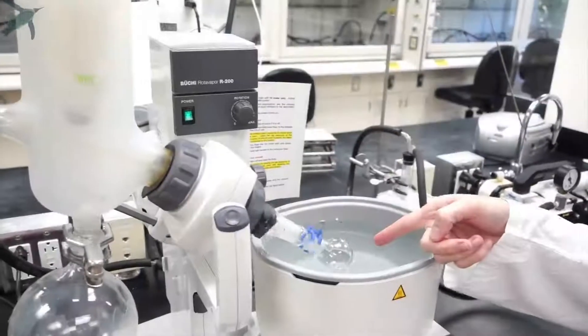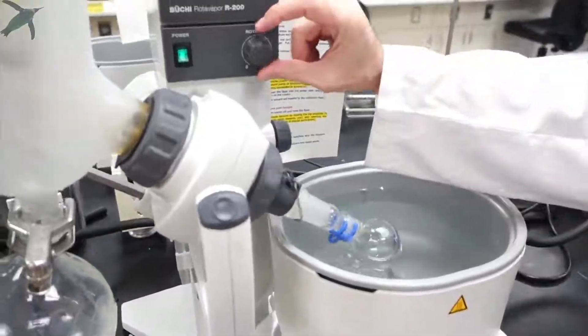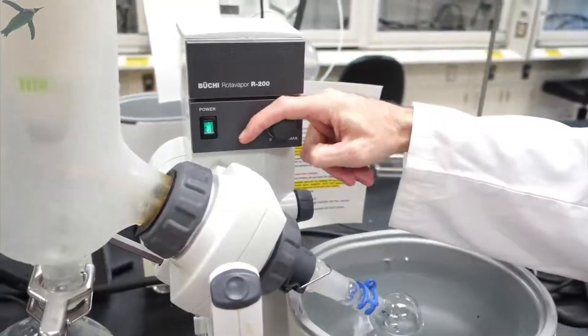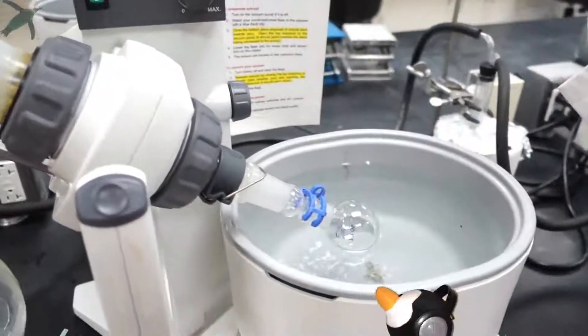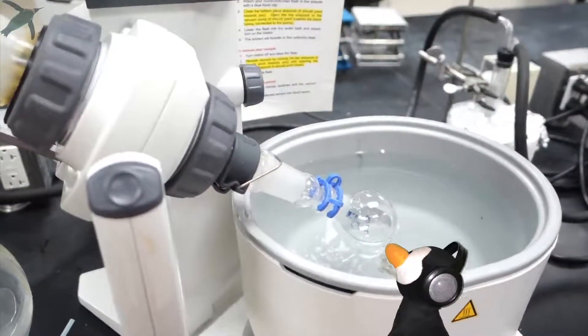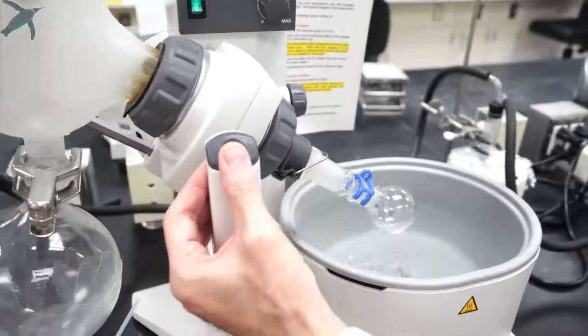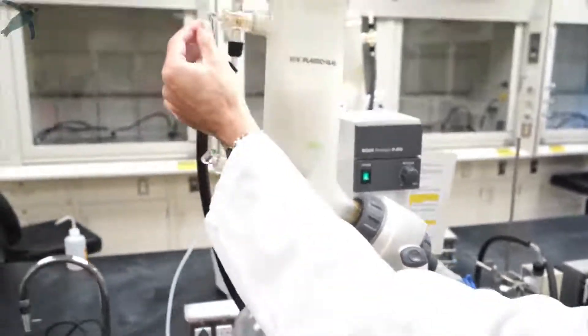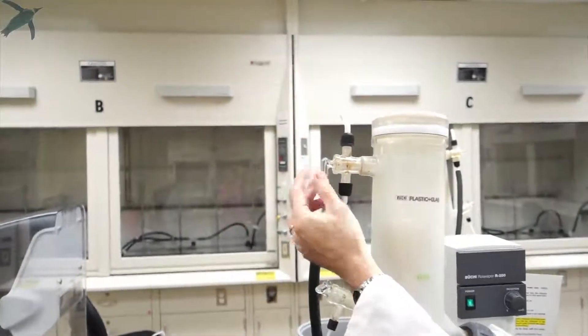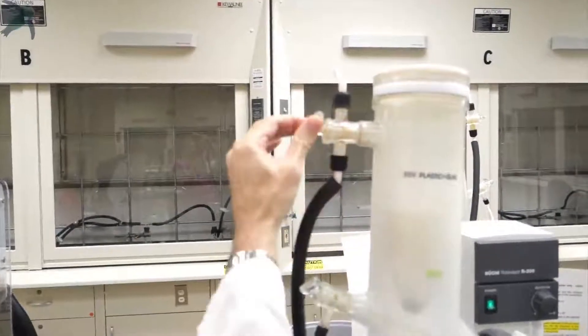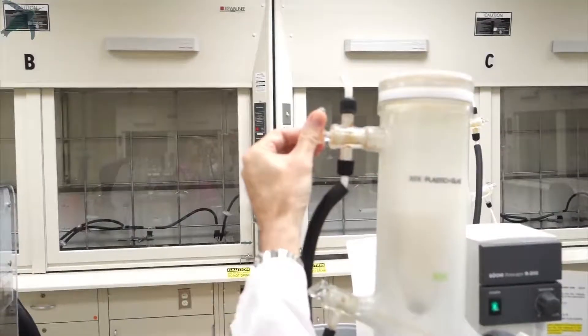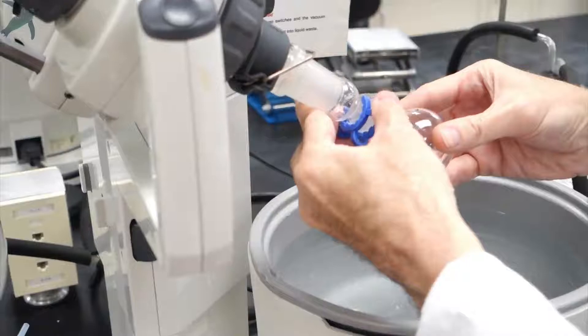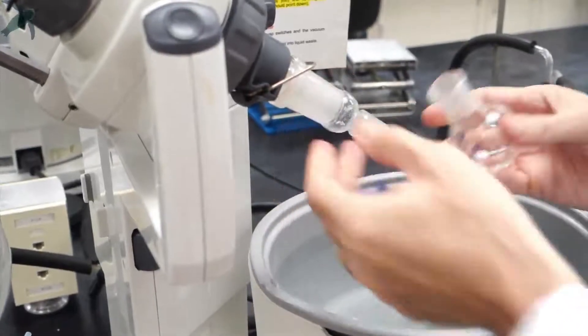When there is no liquid left in your round bottom flask, you can stop the rotation to check that. You lift your flask out of the water bath, vent the system—you want to hear it hissing—then you remove the keck clip and remove your flask.